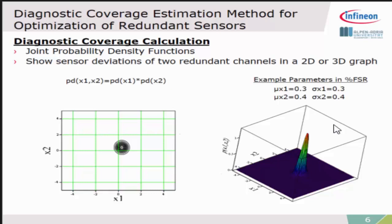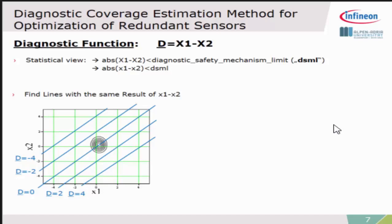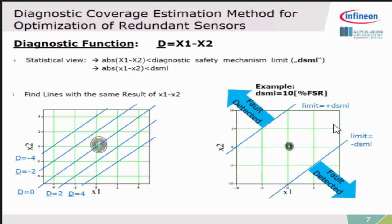Going to the diagnostic function, as mentioned in the beginning, the diagnostics is done by the subtraction of the first channel and the second channel. This should be smaller than the diagnostic safety mechanism limit. In my calculations, I used DSNL. When we have a look now on this joint probability density function, we have a look on all points where the result of X1 and X2 gives the same number. We see there are certain lines with the same output, and having the line with the diagnostic limit, we know everything outside this limit which we can detect. Inside this limit, we don't raise an alarm.